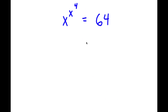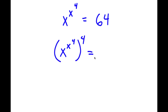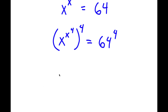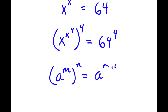In this problem, I have x to the power of x to the power of 4 is equal to 64. The first thing I'm going to do is take the power of 4 on both sides. So now I have x to the power of x to the power of 4, to the power of 4, is equal to 64 to the power of 4. Now, if I have something in the form a to the power of m to the power of n, this is simply equal to a to the power of m times n.